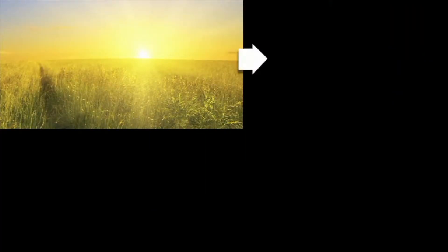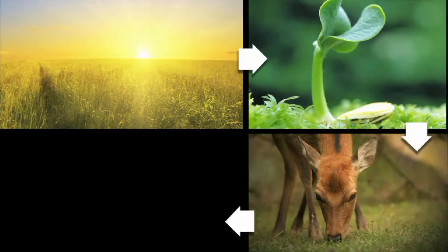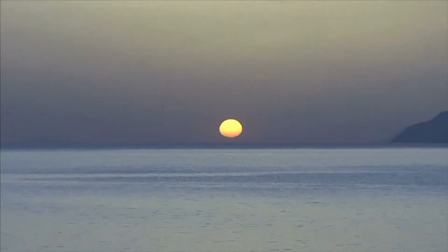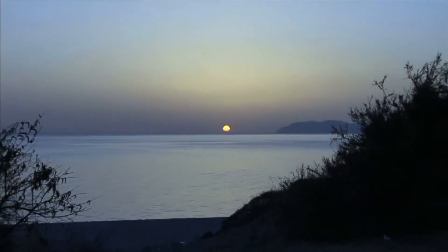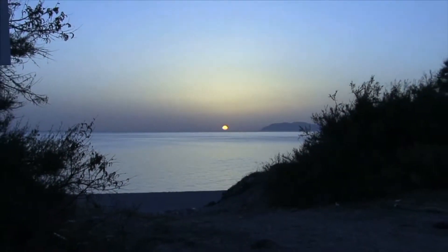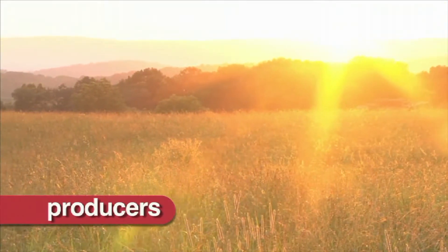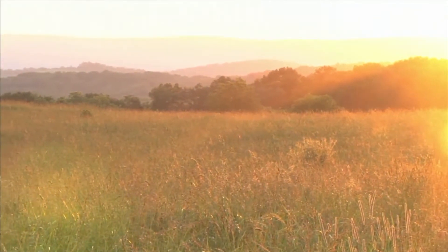Most people eat plants and animals to get the energy they need. To better understand how living things get energy, we use a food chain. A food chain shows the relationship between the plants and animals in an ecosystem. All food begins with the sun. The sun provides energy for everything on our planet. Plants are producers. Producers are at the beginning of a simple food chain. Plants get energy from the sun.